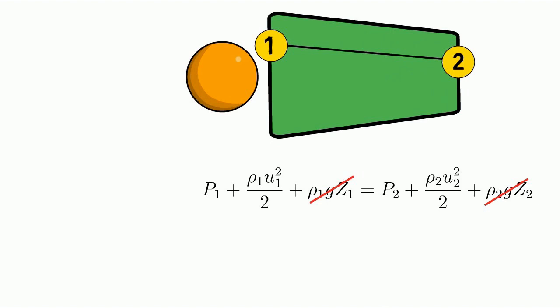From mass conservation law, we can say whatever mass going in the reducer is coming out of the reducer. And continuity equation is written like this.